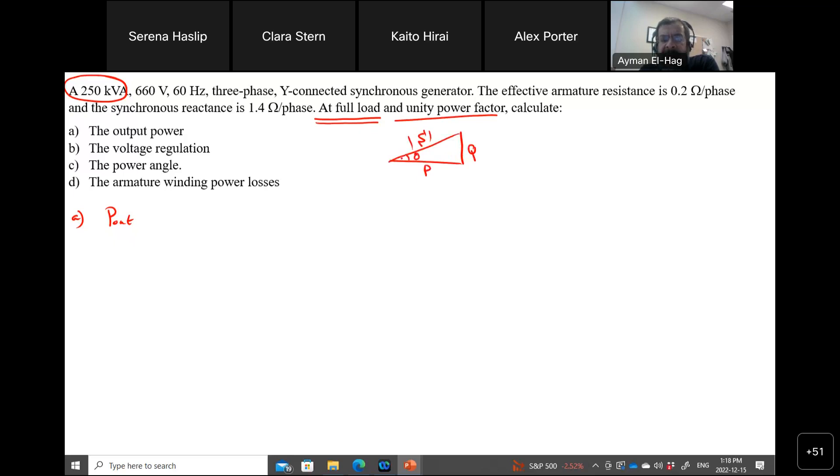And this is your power factor angle. Now the power factor here is unity. It means the angle is 0. It means that P out is equal to S out, which is equal to 250 kilowatt, as simple as that. So this is your output power.